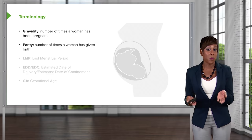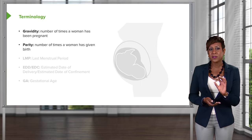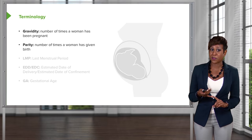Parity can also be better defined by the acronym TPAL: term births (births after 37 weeks), preterm births (births before 37 weeks), abortions (births before 20 weeks), and then the number of live births.